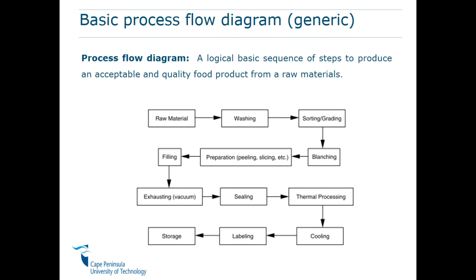Not all ingredients in a food processing flow diagram are used at the same time — some of them are added sequentially, as I will show in the flow diagrams I'm going to require from you. A flow diagram of this nature also has limitations because it does not inform us about the processing parameters that one needs to adhere to when producing a food product. We already saw that different vegetables need to be blanched at different times, so here we don't know what these ingredients must be blanched for, for how long, at what temperature, and if there is thermal processing we don't know the temperature, and cooling — to what temperature and for how long.